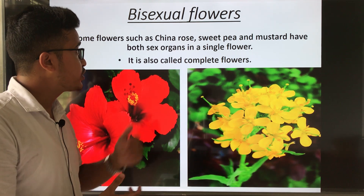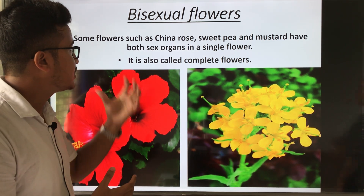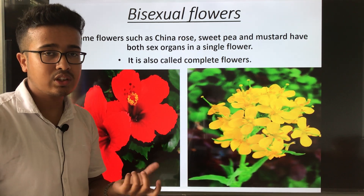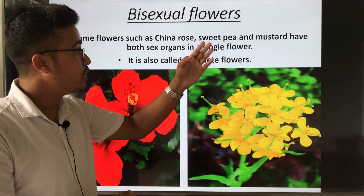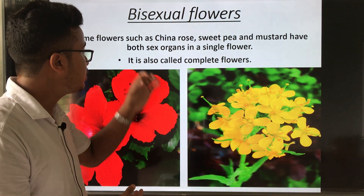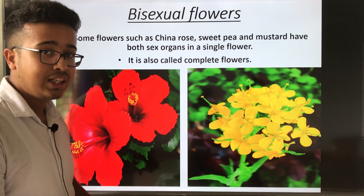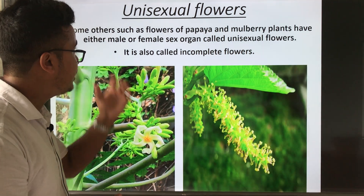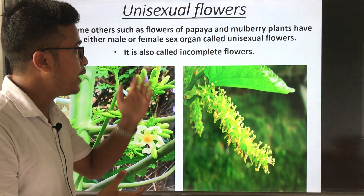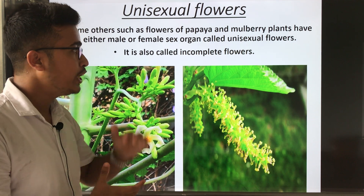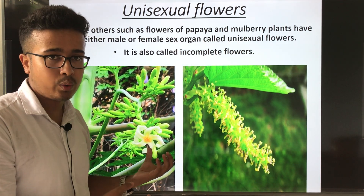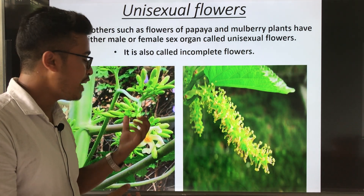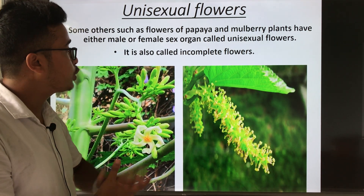Now, bisexual flowers: some flowers such as china rose (hibiscus) and mustard have both sex organs in a single flower — these are also called complete flowers. Unisexual flowers: some other flowers such as papaya and mulberry have either male or female sex organ — these are called unisexual flowers, also called incomplete flowers.